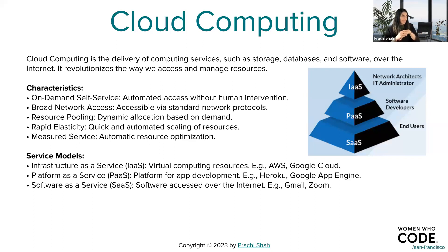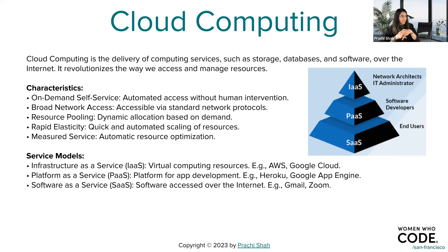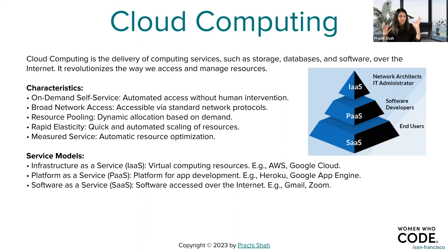Rapid elasticity: you can automate scaling up or down of resources — from RAM to address space to complete application servers. Measured service means resource optimization: if your application is assigned five servers but only utilizing three, it downscales to three and frees the rest. These systems are quite smart, efficient, and automated. There are three cloud service models: Infrastructure as a Service (IaaS) — handled by AWS and GCP at the network and resource level; Platform as a Service (PaaS) — focused on application and framework management.